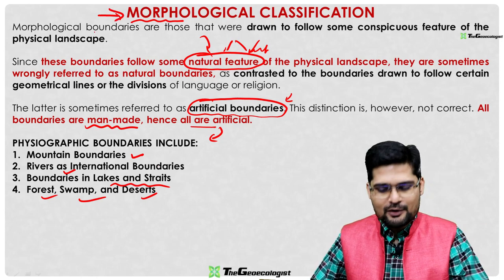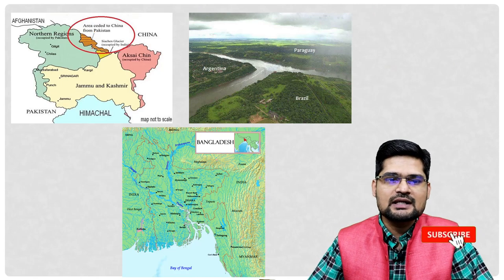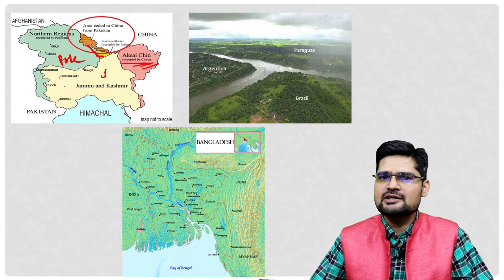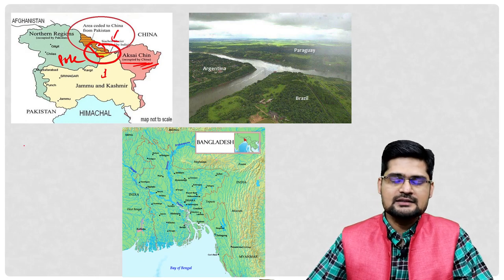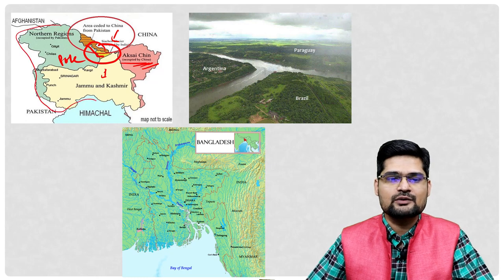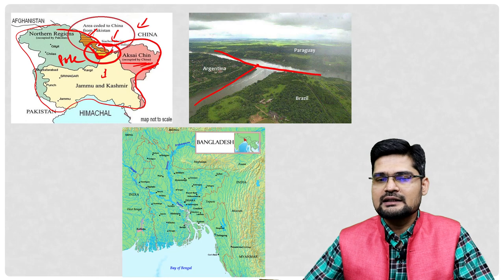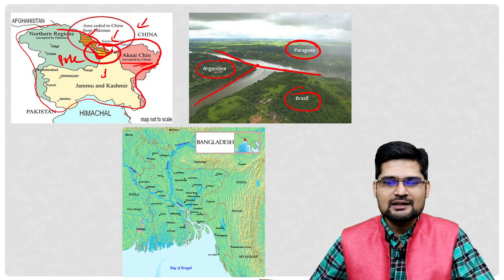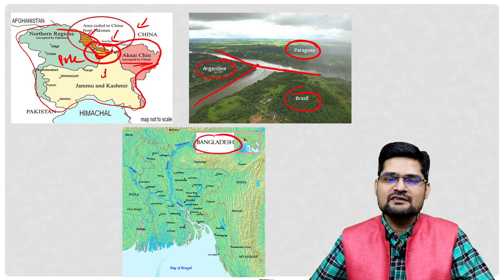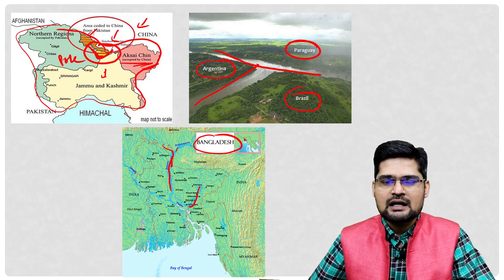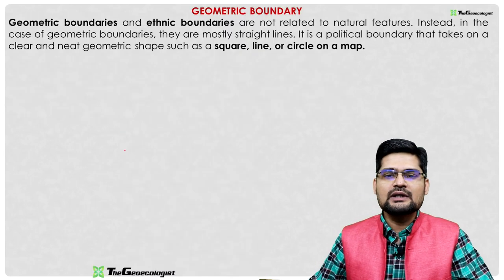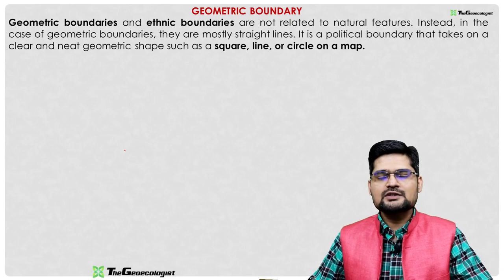In morphological classification, boundaries based on physical landscape features include: mountain boundaries, rivers as international boundaries, lakes and straits, and forest, swamp, and desert boundaries. Examples include the Siachen Glacier area between Pakistan, China, and India — strategically important; the river confluence point between Paraguay, Argentina, and Brazil in South America; and river-front and plateau boundaries visible in the Bangladesh region.